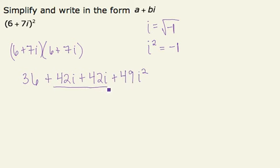42i and 42i can combine together, and that's 84i.